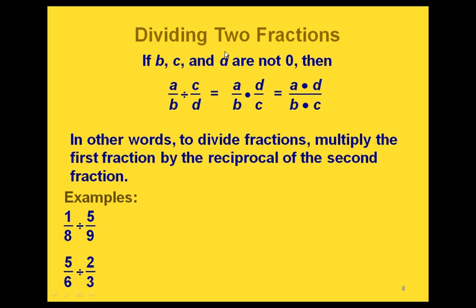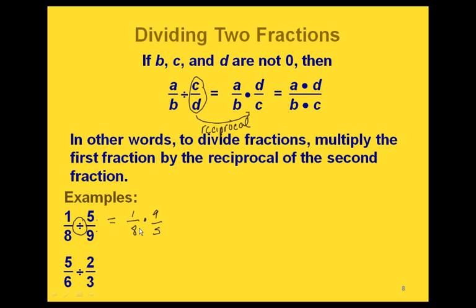Where we're really going to use this is in dividing fractions. If we have a over b divided by c over d, that's the same thing as a over b times the reciprocal of c over d. In other words, we take the second fraction in our division and flip it over — going from c over d to d over c — and that turns it into a multiplication. So instead of 1 eighth divided by 5 ninths, we would have 1 eighth times 9 fifths, and from then on it works just the same as our other multiplication problems.